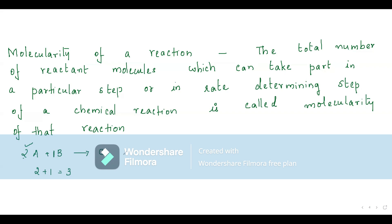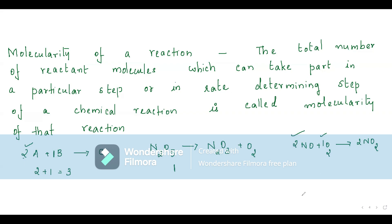For the reaction N₂O₅ → N₂O₃ + O₂, only one molecule of N₂O₅ is involved, so the molecularity is 1. For the reaction 2NO + O₂ → 2NO₂, the molecularity is 2 + 1 = 3. That is about molecularity.